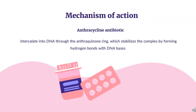Mechanism of Action: Doxorubicin can intercalate into DNA through the anthraquinone ring, which stabilizes the complex by forming hydrogen bonds with DNA bases. Intercalation of doxorubicin can introduce torsional stress into the polynucleotide structure, thus destabilizing nucleosomes and leading to nucleosome eviction and replacement. Additionally, the doxorubicin-DNA complex can interfere with topoisomerase-2 enzyme activity by preventing relegation of topoisomerase-mediated DNA breaks, thus inhibiting replication and transcription and inducing apoptosis.